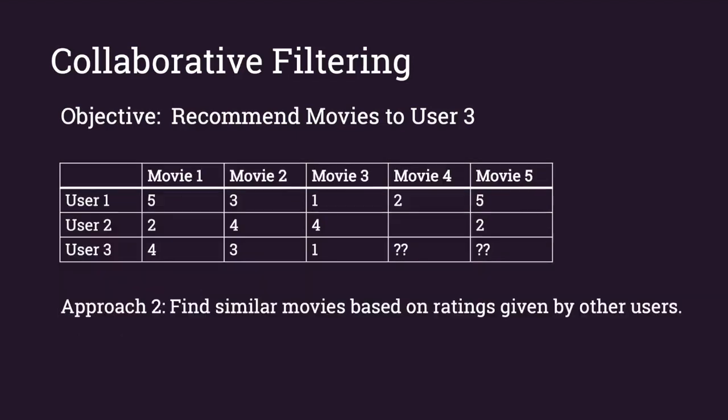The other approach is to look at a movie that user 3 likes — say movie 1 — and directly find movies similar to it based on ratings given by other users. We find that movie 5 has been rated similarly by other users. This approach, where we find similar items based on the items themselves, is called item-to-item collaborative filtering. In practice, item-to-item collaborative filtering generally works much better than user-to-user.